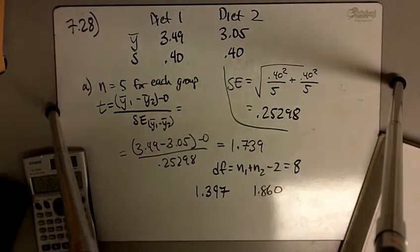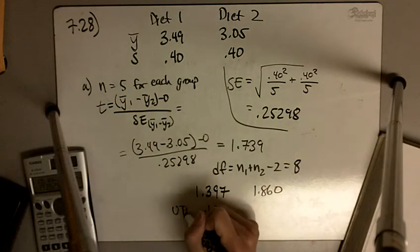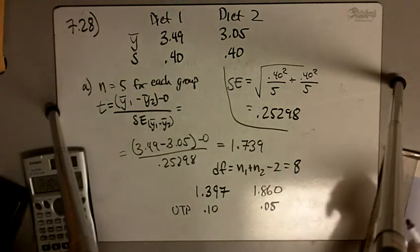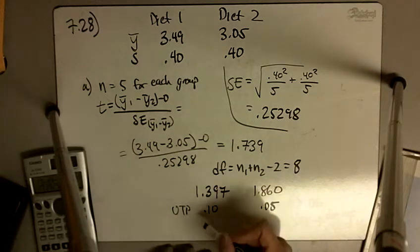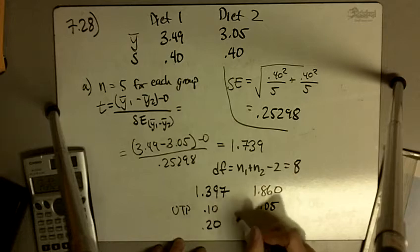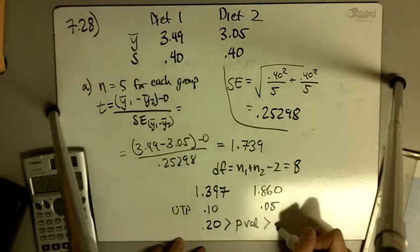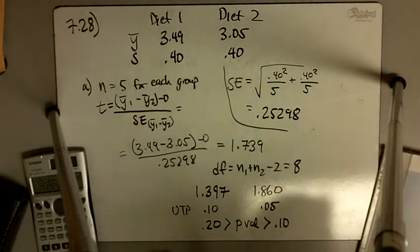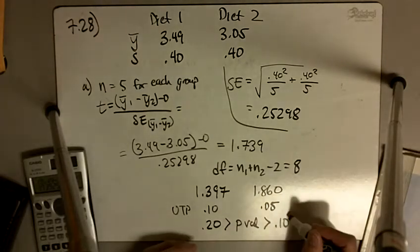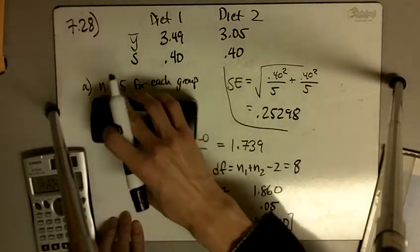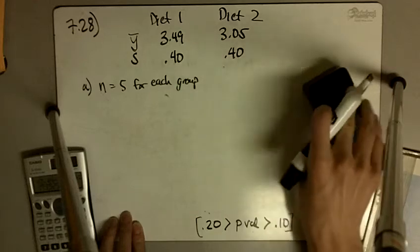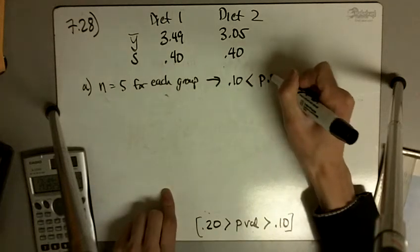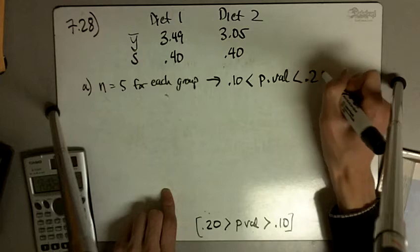1.397 corresponds to an upper tail probability of 10%, and this corresponds to an upper tail probability of 5%. So if we double that, the total tail, our p-value is going to be between 20%, and double this is going to be between 10%. So here, our p-value is going to be 10% and 20%. It didn't give us an alpha level, but this is our p-value. Our p-value is in between 10% and 20%. So for part A, with n equal to 5 for each group, that leads us to a p-value that's, I'm going to just switch the sides, 10% is less than our p-value, less than 20%.